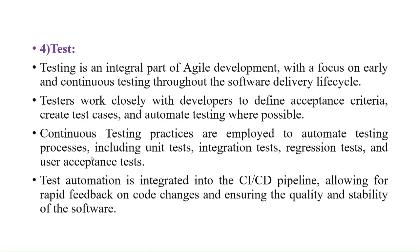In the Agile Development Model we do automation testing — it will be tested automatically. Continuous testing practices are employed to automate the testing process, including unit tests, integration tests, regression tests, and user acceptance tests. Test automation is integrated into the CI and CD pipeline — CI means continuous integration, CD means continuous delivery — which we will discuss in upcoming chapters.